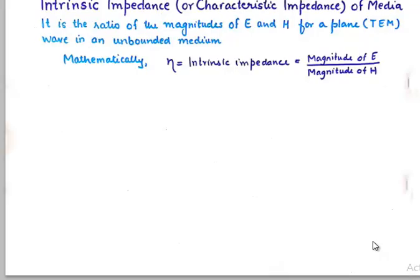Let's look into the definition of intrinsic impedance. It is the ratio of the magnitude of E — where E is the electric field intensity — to H, the magnetic field intensity, for a plane wave in an unbounded medium. There are two conditions for this expression to be true: mathematically, the intrinsic impedance equals magnitude of E upon magnitude of H, and that holds true only if the wave is transverse electromagnetic and is traveling in an unbounded medium.